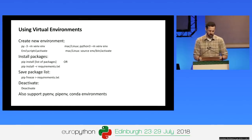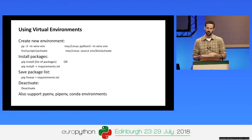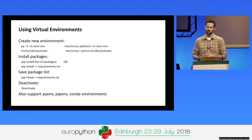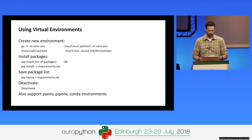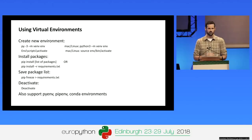Virtual environments are very useful. A lot of people check in a requirements.txt file into their repo to easily package up the dependencies their Python code has. You can pip install with a -r requirements.txt file and generate one using 'pip freeze'. When done, type 'deactivate' from the terminal. We also have support for pyenv, pipenv, and conda environments in VS Code — they'll show up in the interpreter list.